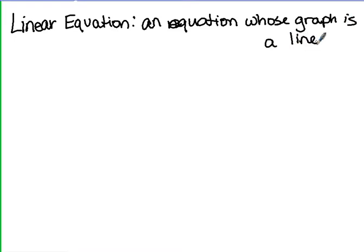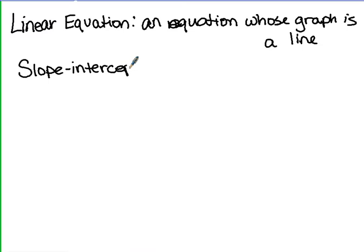Linear equations are often written in what we call slope intercept form. This is the way that we graph lines. This is our y equals mx plus b form — that is called slope intercept form.